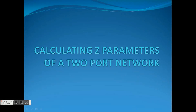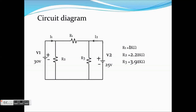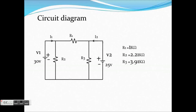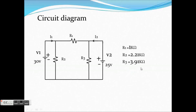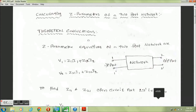Calculating Z parameters of a 2-port network. The circuit diagram shows resistors R1, R2, R3 connected in a pi network. The respective values are R1 equal to 1 kΩ, R2 equal to 2.21 kΩ, and R3 equal to 3.91 kΩ.